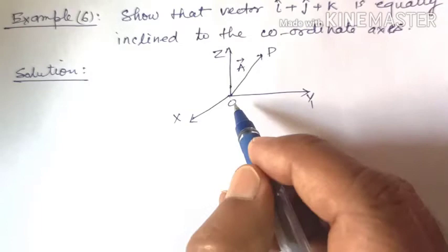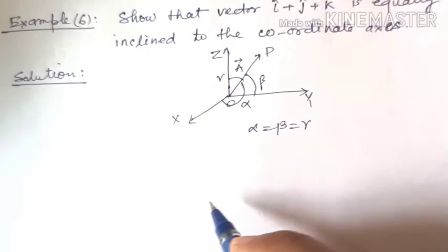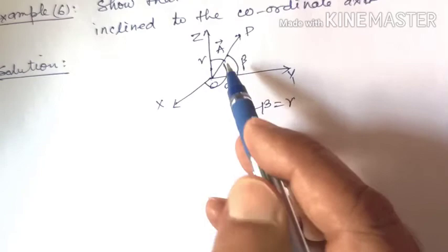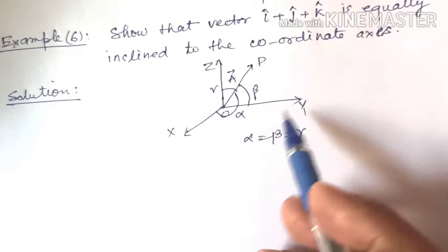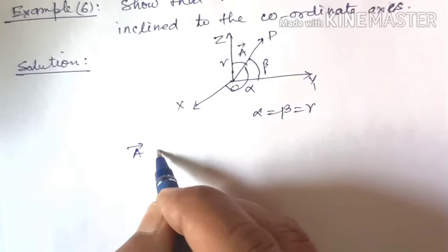We can show this by proving that the direction cosines of this vector are all the same. If the direction cosines are equal, the vector is equally inclined to all axes. Suppose vector a is i plus j plus k. To find direction cosines, we find the unit vector by dividing by the magnitude.